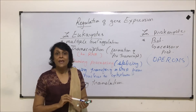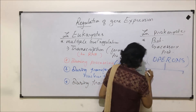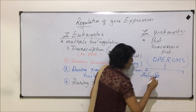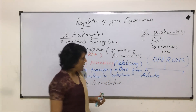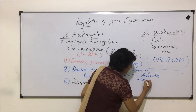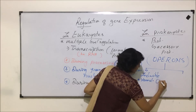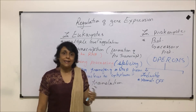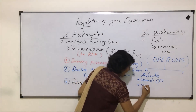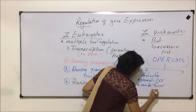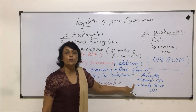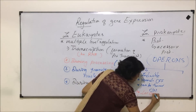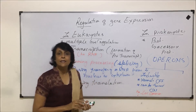There are two types of operons: inducible and suppressible. An inducible operon is normally in the off mode — in normal conditions it remains off, and it can be turned on as and when required. The example of this is the lac operon.